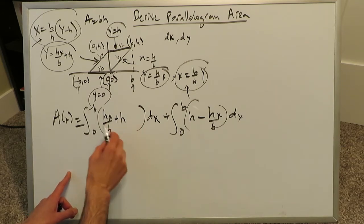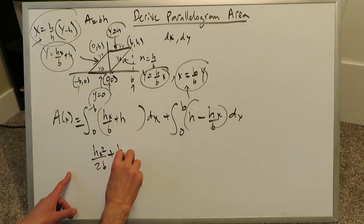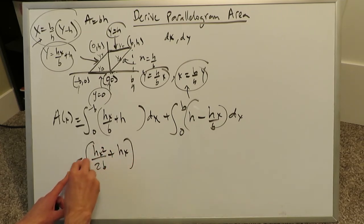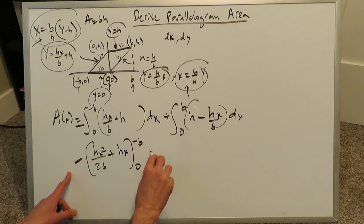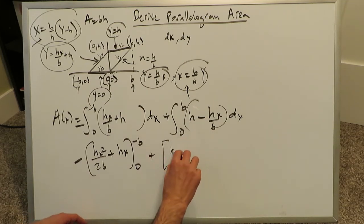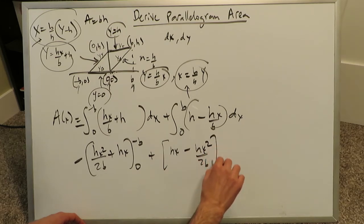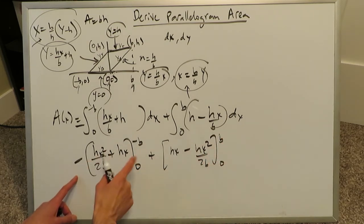Let's integrate this, because it's easy. Everything here is with respect to x. Integration of this would be hx squared over 2b plus hx. And then we have a minus here, minus b and 0 plus. Here will become an hx. Here will become minus hx squared over 2b from b and 0.